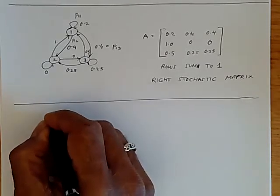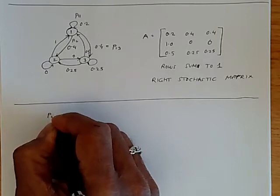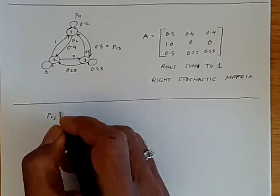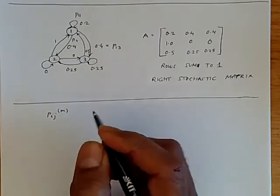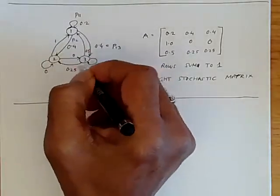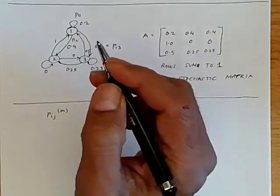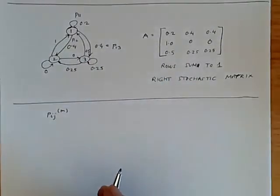But let's say we want to look at the transition probability to go from state i to state j, not in one step, but after n steps. So the Markov process has gone through a certain number of steps, and we want to know what the probability is.